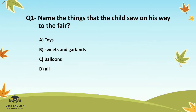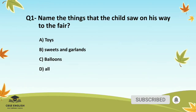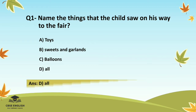Question number one: Name the things that the child saw on his way to the fair. Options are: toys; sweets and garlands; balloons; or all. The correct answer is all.